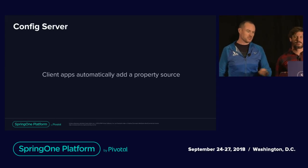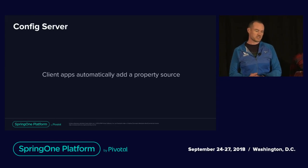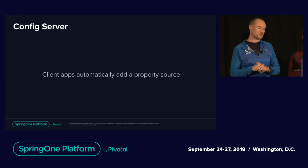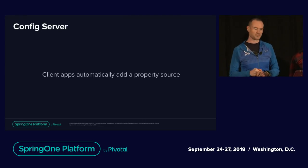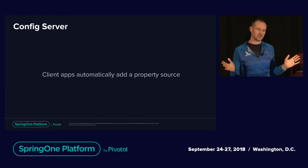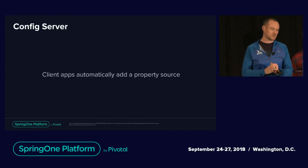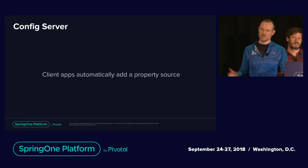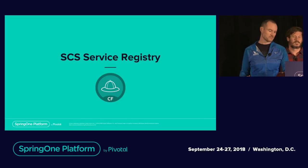When you use the SCS starters — we have our own Spring Boot starters for SCS — when you use those with a client application, we automatically add the property sources to your application. There's no additional configuration you have to do for your application to be able to consume that configuration.